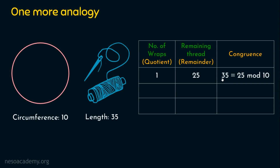Here, the modulus is the circumference. I can wrap around any number of times; here I have wrapped around only one time. After one wrap-around, 25 units of thread remain. So the equivalent congruence is: 35 is congruent to 25 mod 10. This means 35 divided by 10 with quotient 1 leaves remainder 25. It is clear that the circumference of the circle is acting as the modulus.